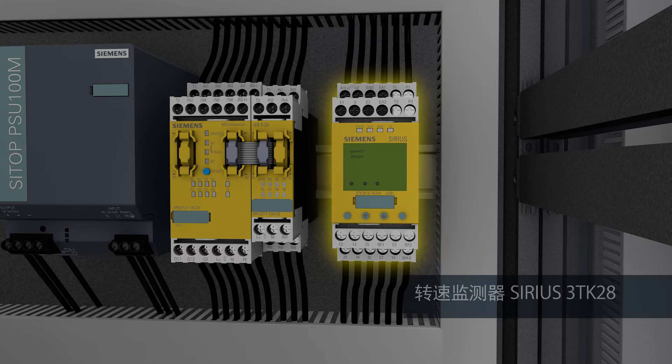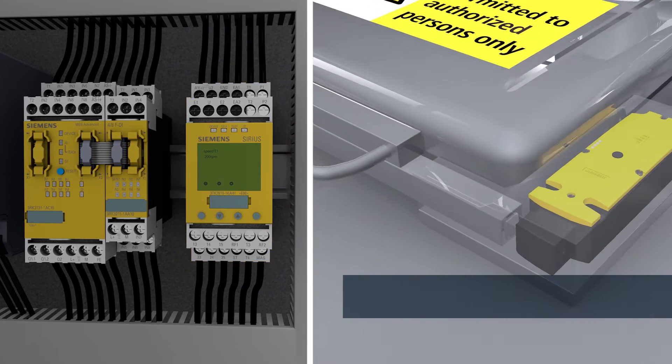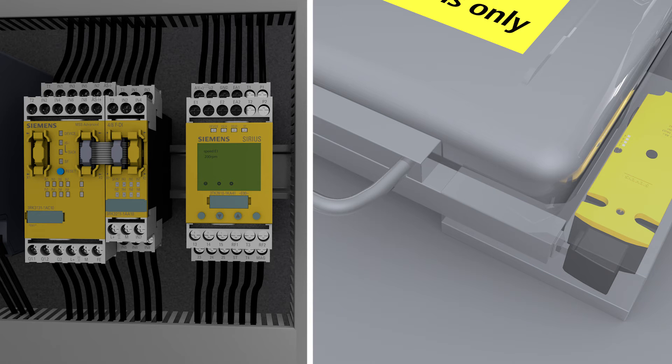With the speed monitor, you can protect your machine safely against overspeed and the resulting damage. And in conjunction with the Sirius 3SE5 position switch, you can protect your personnel against intervening unintentionally in the hazard zone.